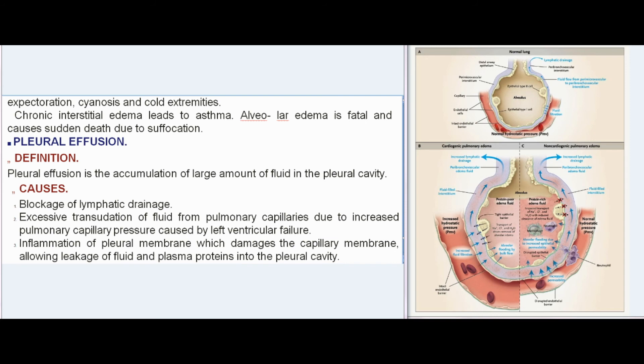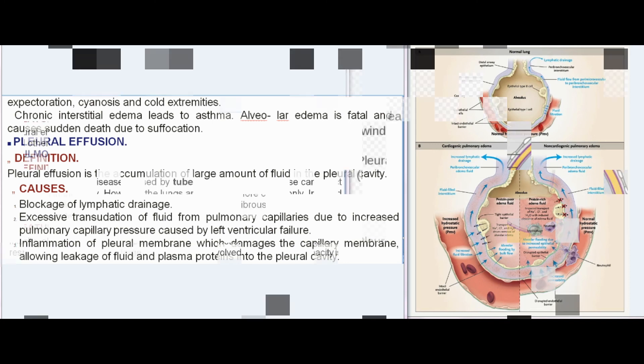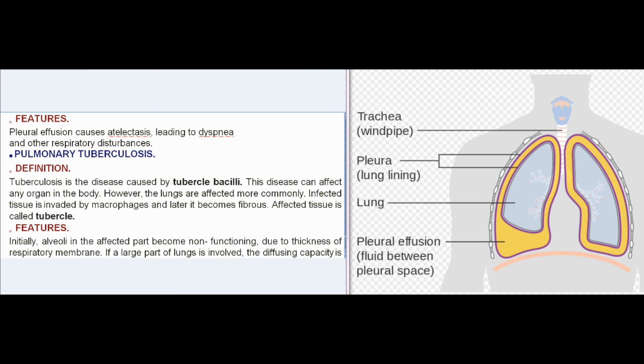Pleural effusion is the accumulation of a large amount of fluid in the pleural cavity. Causes include blockage of lymphatic drainage, excessive transudation of fluid from pulmonary capillaries due to increased pulmonary capillary pressure caused by left ventricular failure, and inflammation of the pleural membrane which damages the capillary membrane, allowing leakage of fluid and plasma proteins into the pleural cavity. Pleural effusion causes atelectasis, leading to dyspnea and other respiratory disturbances.